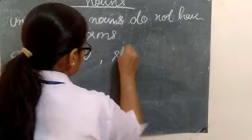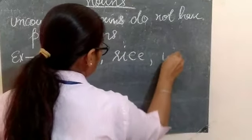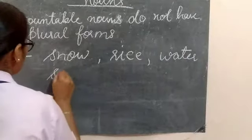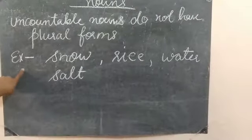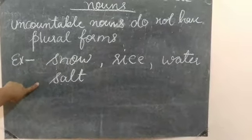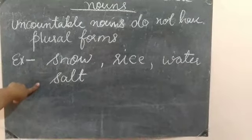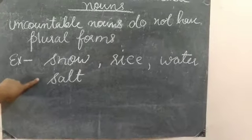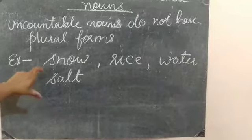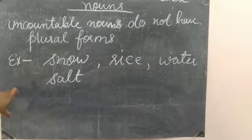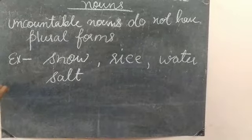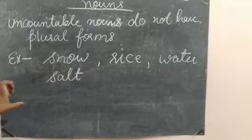Next is rice, water, and salt. We cannot count snow, rice, water, and salt. So these are uncountable nouns. Uncountable nouns may be in the form of liquid, powder, gases, and also abstract nouns.